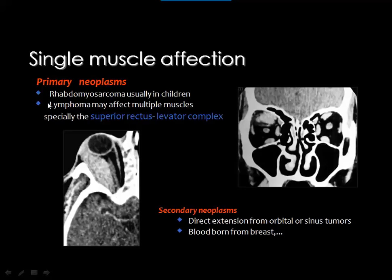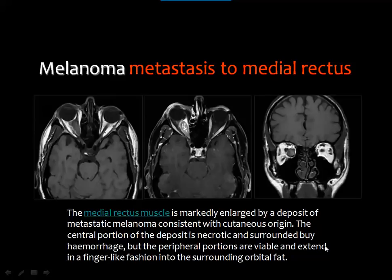Primary neoplasms affecting the orbit include rhabdomyosarcoma, especially in children, and lymphoma in children and adults. An important clue: if you see single muscle affection particularly involving the superior rectus levator complex, this suggests lymphoma. For example, melanoma can produce metastasis to the medial rectus muscle — visible as a mass involving the right medial rectus on coronal imaging, with the superior rectus, optic nerve, lateral rectus, and inferior rectus appearing normal. Knowing the primary malignancy helps diagnose metastatic disease.